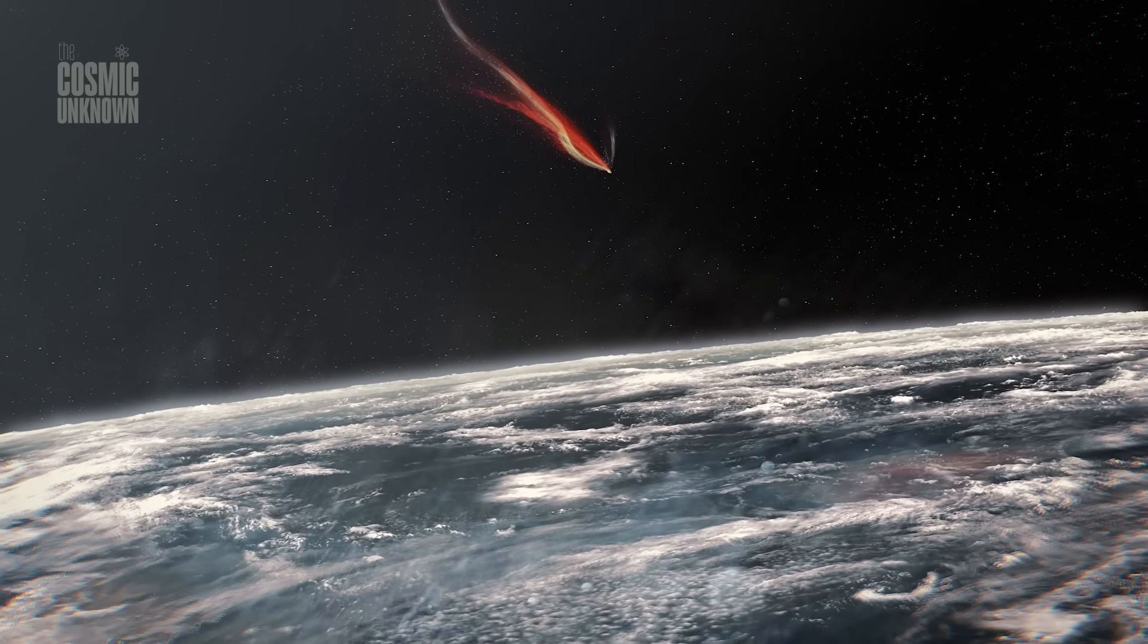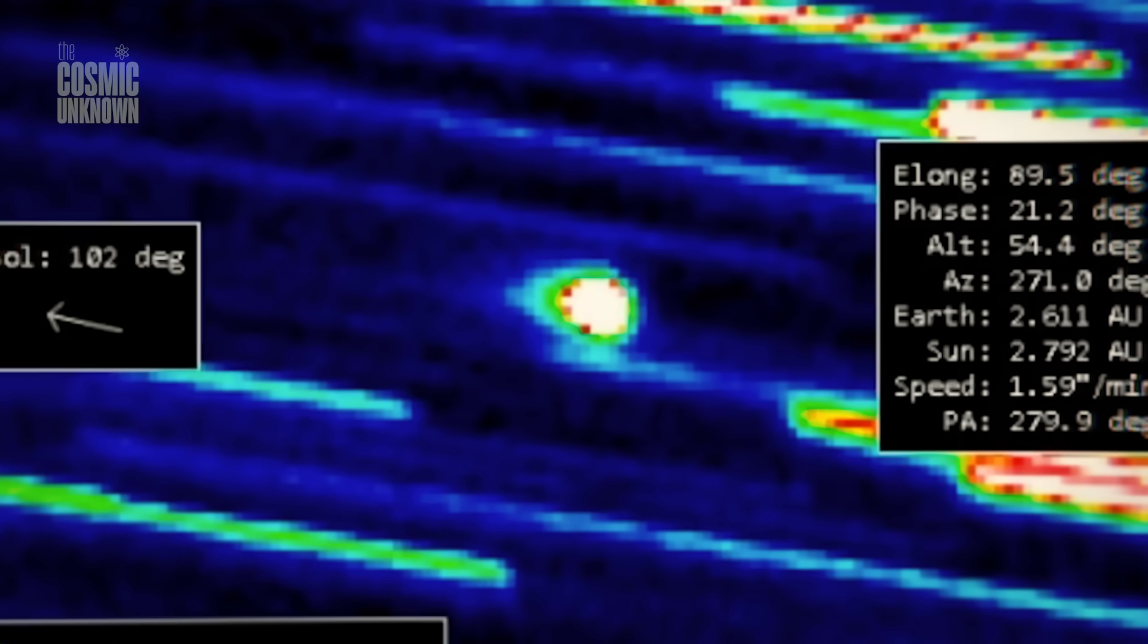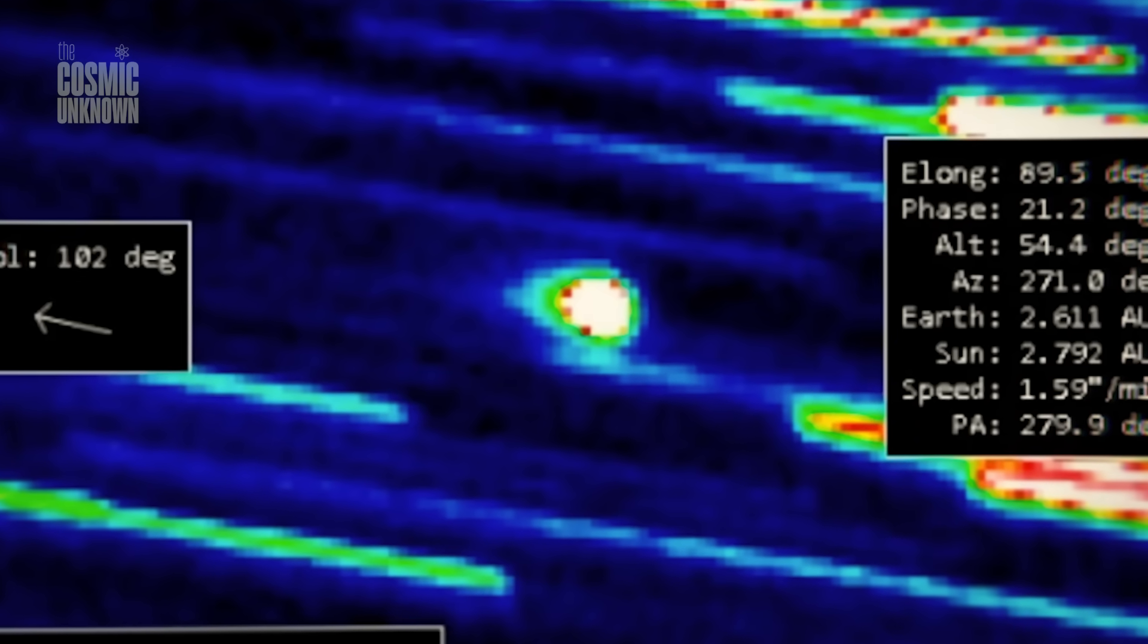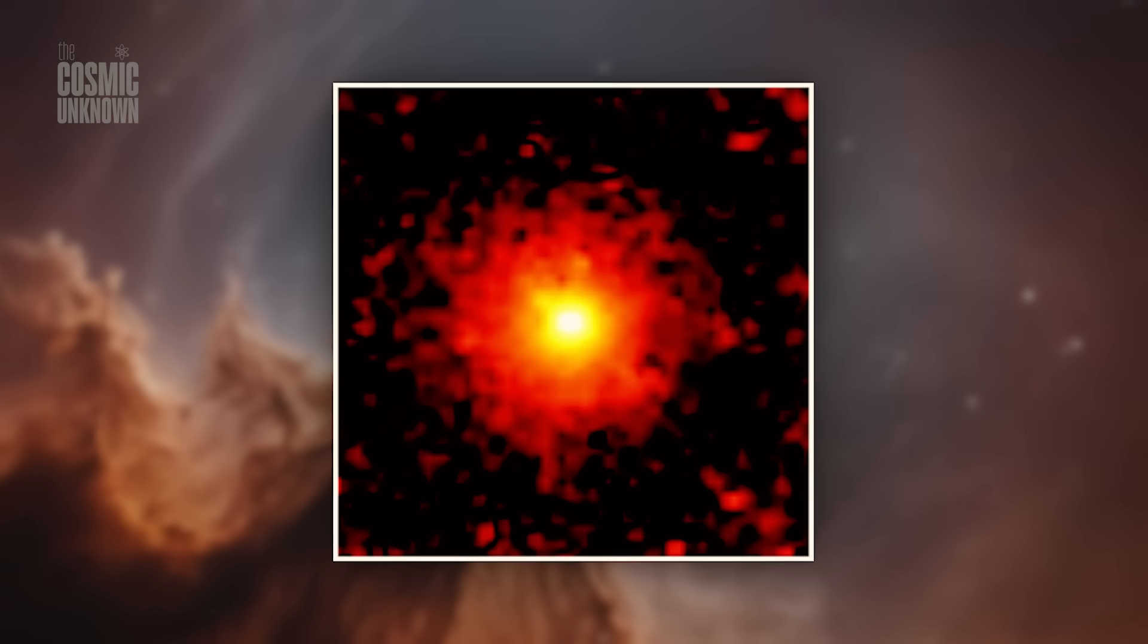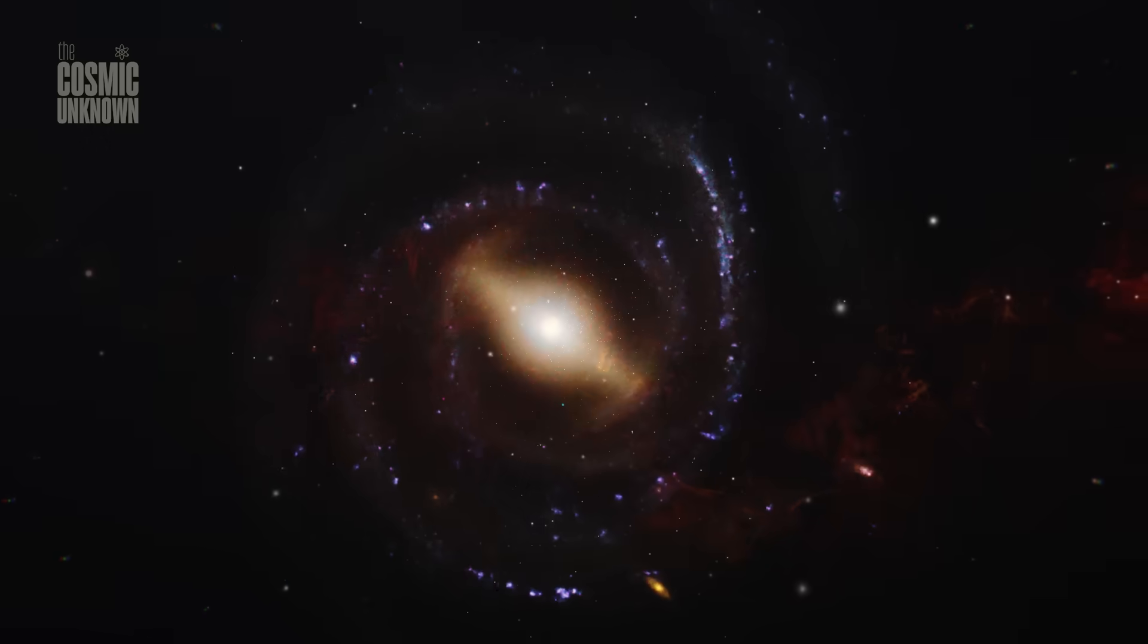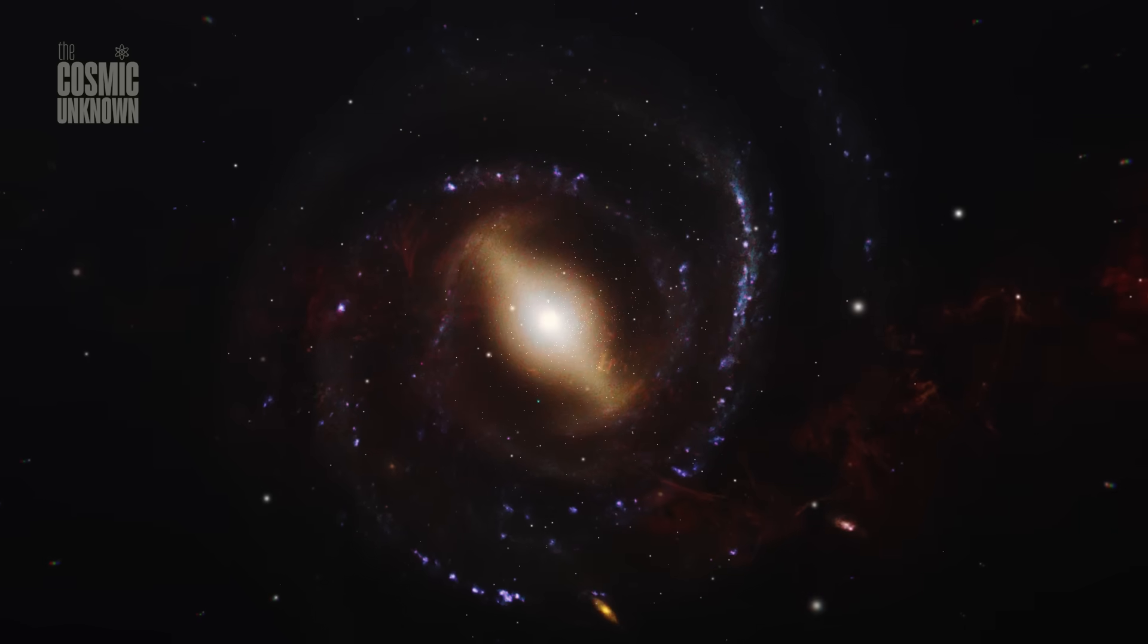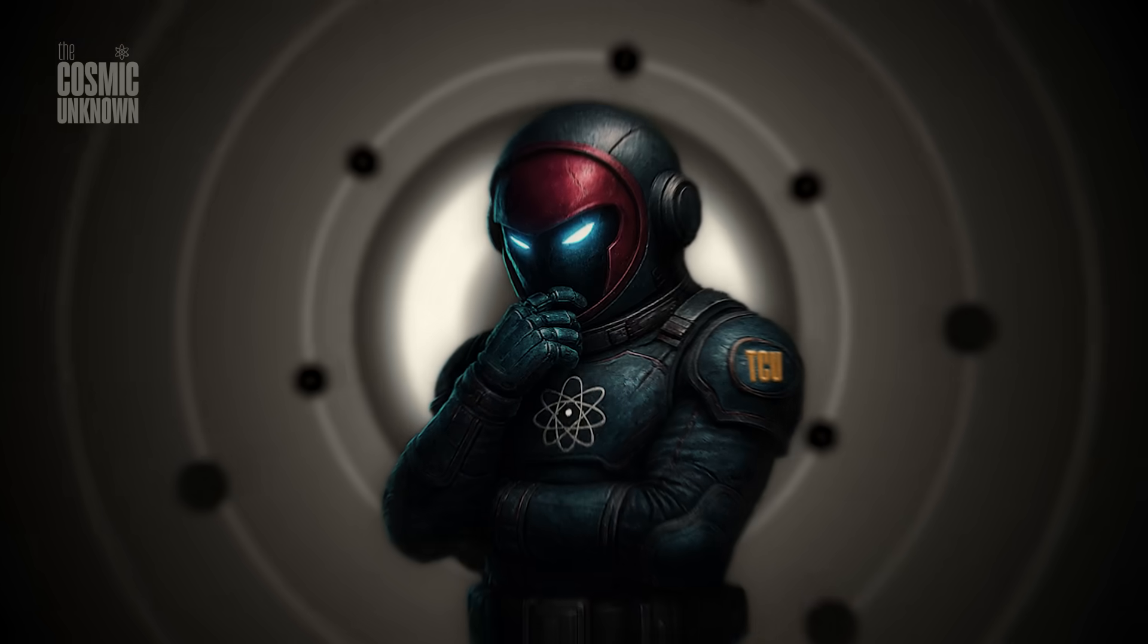Nickel and iron may be born together, but they behave very differently once exposed to light, heat, and radiation. Nickel, it turns out, has a tendency to flee. In the presence of solar energy, it bonds with carbon monoxide, forming nickel carbonyl, a volatile compound that vaporizes easily, releasing nickel gas into space.